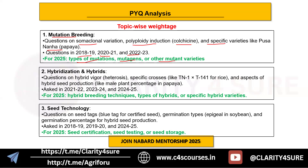The second topic is hybridization and hybrids. Questions on hybrid vigor — particularly heterosis — specific crosses, and aspects of hybrid seed production like male plant percentage in papaya were asked in 2021, 2023, and 2024. This seems to be a trending topic with questions becoming more frequent recently. We can expect questions on hybrid breeding techniques, types of hybrids, and specific hybrid varieties.